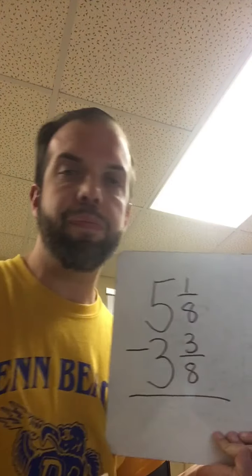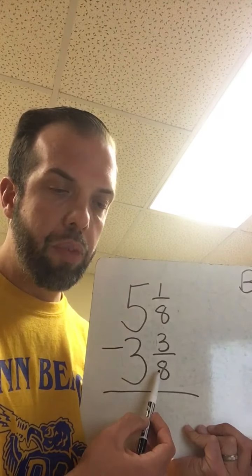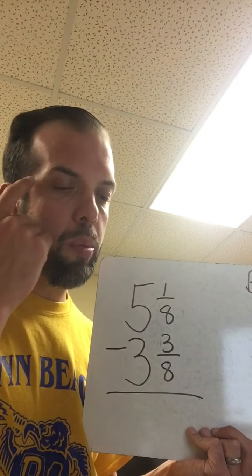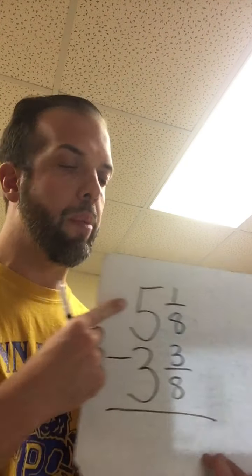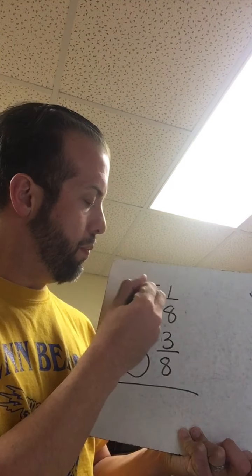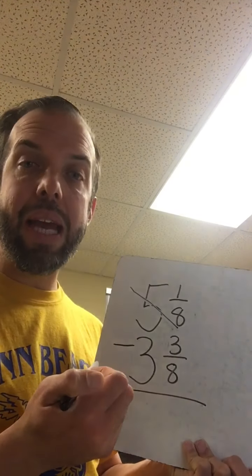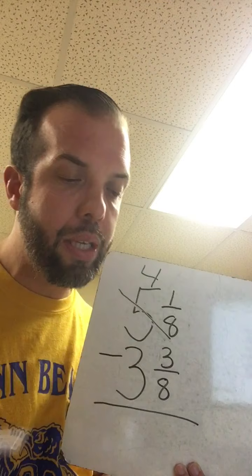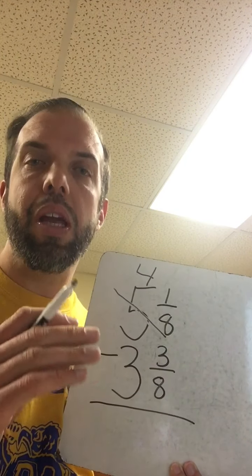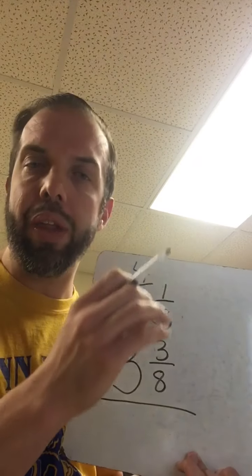Alright, step number one says, this is right in our notes. Pause the video if you don't have your notes and go get them because you need them. Step number one, look at the fractions you are subtracting. If the numerator on the bottom is larger than the numerator on the top, you must borrow from the whole number. Got it. Just said that. Step number two, borrow one whole from the whole number, which would be our five. So I have to borrow one whole from that whole number. So I'm going to cross out my five, and I'm going to make that five a four, just like I would in whole number world. Alright? So I'm crossing out the five and making it a four.